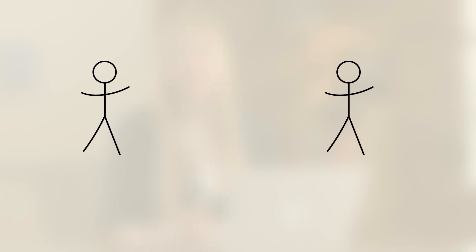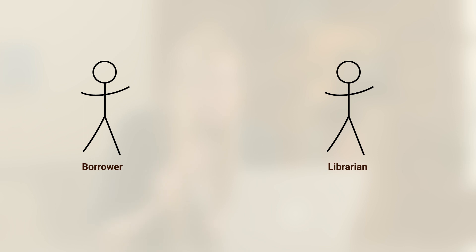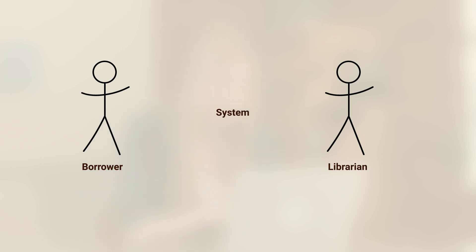Our actors are the different players in our scenario. What might emerge from the use case that we wrote is that the two actors are a librarian and a borrower. Actors are represented by drawing stick figures with their names underneath. No need to be more creative than that. In the middle we have what's called the system.